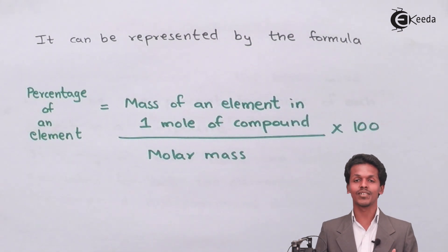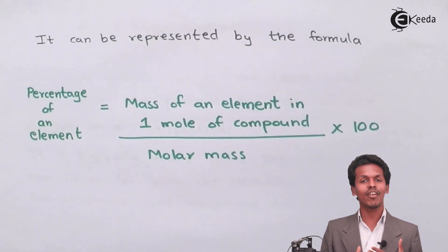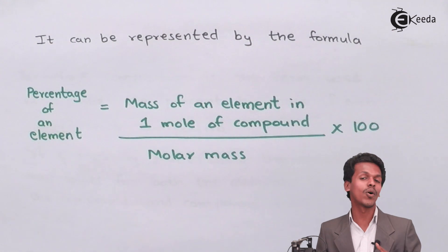Two divided by 18 times 100, you will get a value of around 11.11. This is the percentage of hydrogen that it contains. And the rest of the part would be for oxygen.